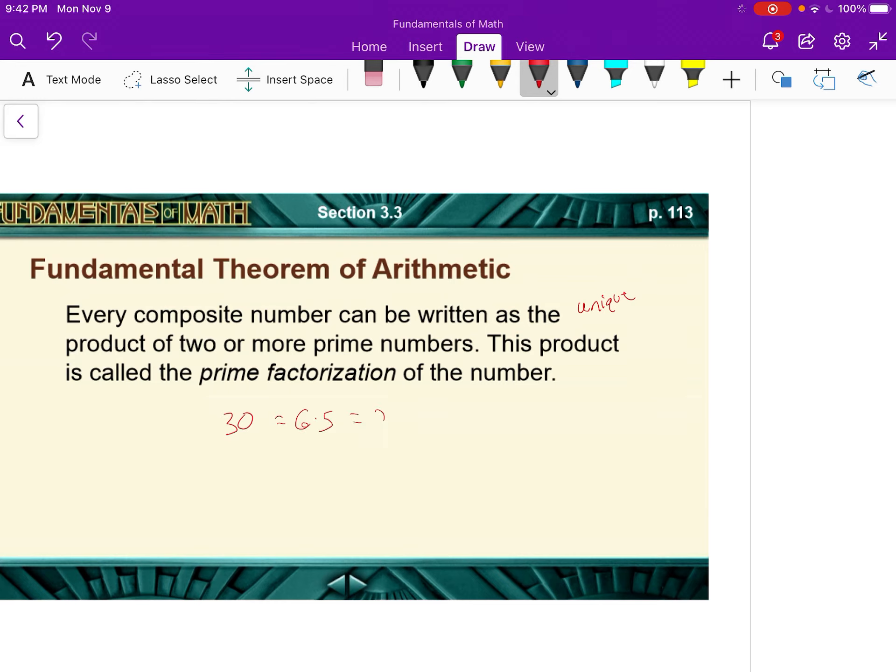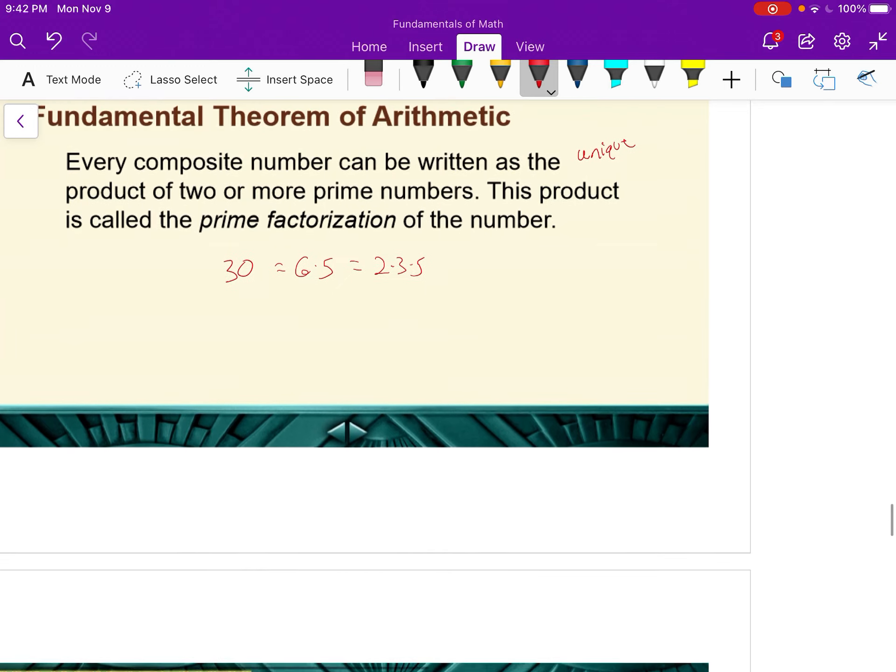30 can be written as 6 times 5. Well, 6 can be written as 2 times 3. So the prime factorization of 30 is 2 times 3 times 5. Notice we don't put any composite numbers in there, and we don't put 1 in there. So the prime factorization is 2 times 3 times 5.